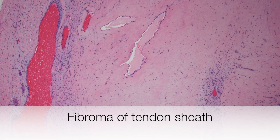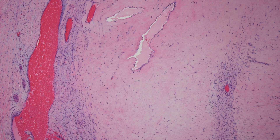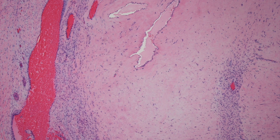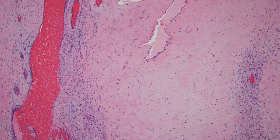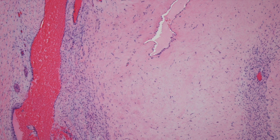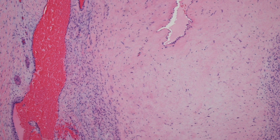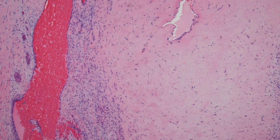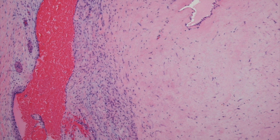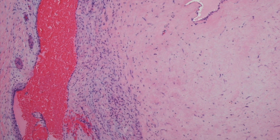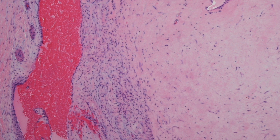This is a low-power view of a fibroma of tendon sheath. You can appreciate two things: first, the lesion has a rather lobulated appearance, and secondly, you can see that there is variable cellularity. Towards the left of the picture is a dilated blood vessel.